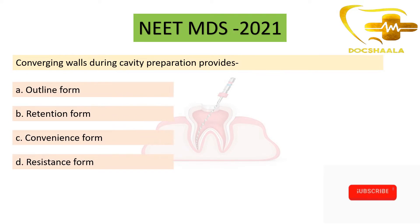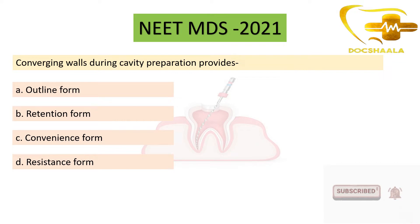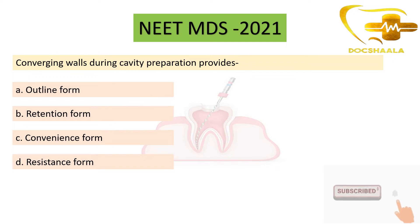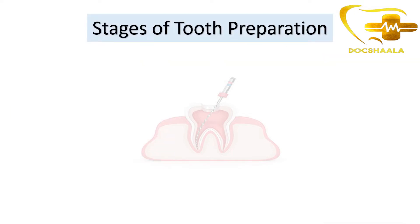The question was: converging walls during cavity preparation provides — with options: option A outline form, retention form, convenience form, and resistance form. For this question you need to know what are the stages of tooth preparation that we use.